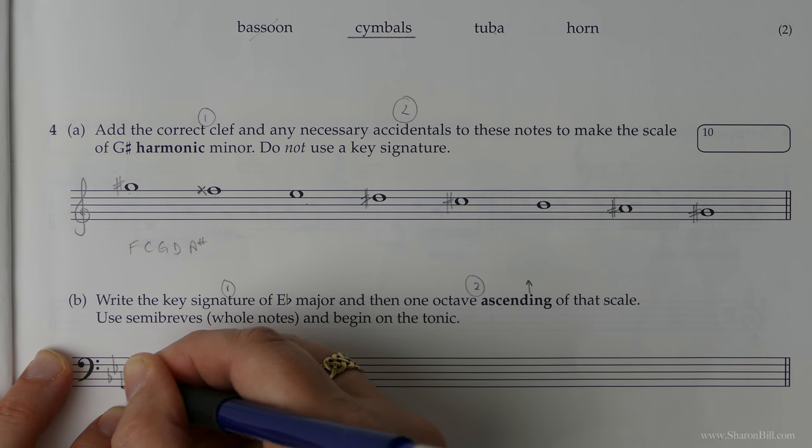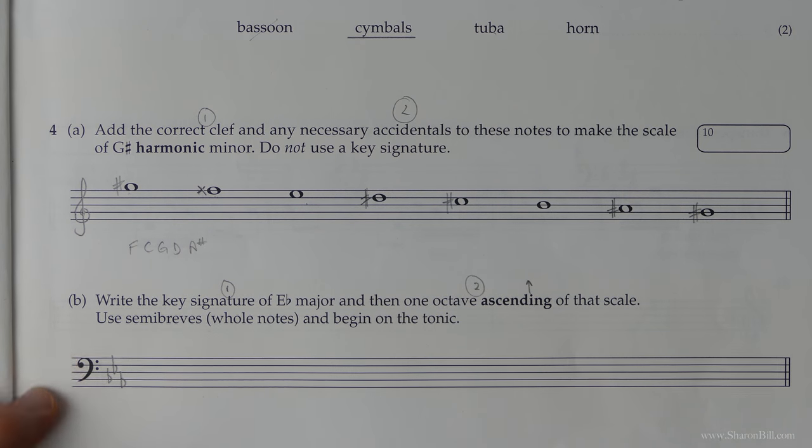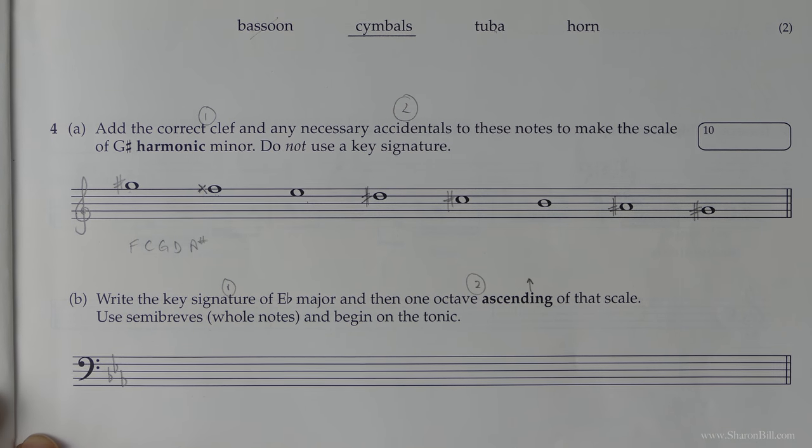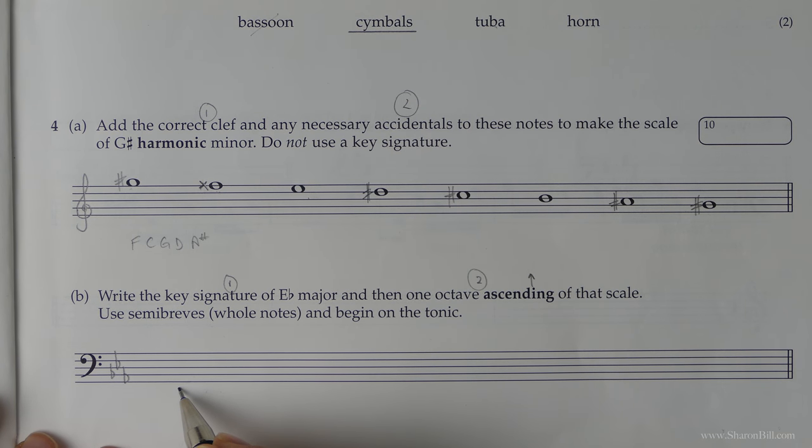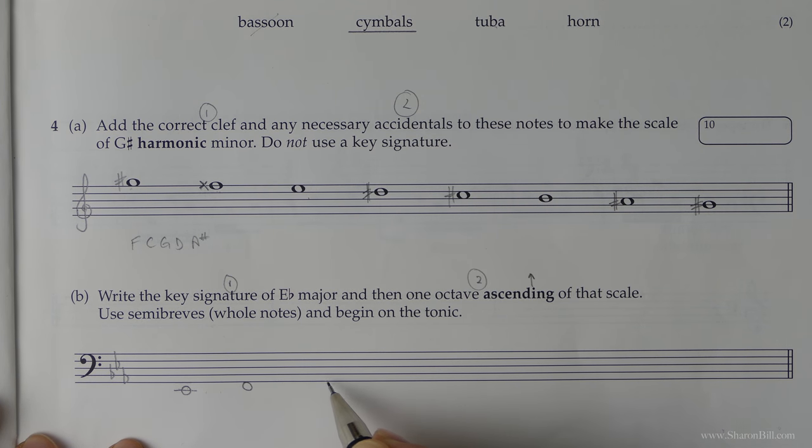So key signature of E-flat major is B-flats, E-flats and A-flats. Be careful you position that correctly for the bass clef. And so I'm going to begin on a low E. We know that this is a G. Good boys deserve. So G, F, E will require a ledger line.